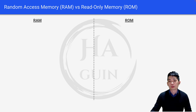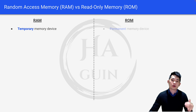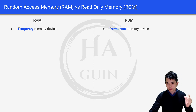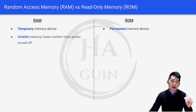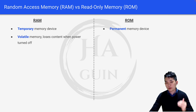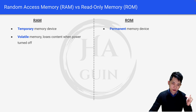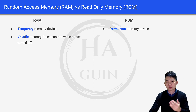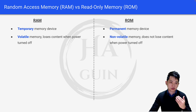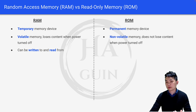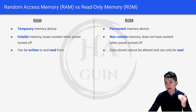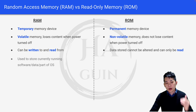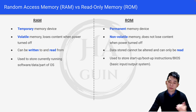Next let's look at the differences between RAM and ROM. RAM is a temporary memory device and ROM is a permanent memory device. RAM is a volatile memory — it loses content when power is turned off, so if you turn off your computer your RAM memory will be lost. Whereas ROM is non-volatile memory, meaning it does not lose content when the power is turned off. RAM can be written to and read from, whereas the data stored in ROM cannot be altered and can only be read. RAM is used to store currently running software, data, or part of the OS, whereas ROM is used to store startup/boot-up instructions, or BIOS, which stands for Basic Input/Output System.